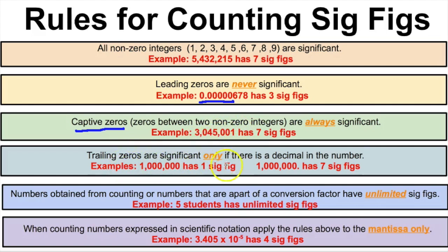Rule four: trailing zeros are significant only if there's a decimal in the number. If we write one million as 1000000 — without a decimal — there's only one sig fig because the trailing zeros are not significant. But if we write it as 1000000. with a decimal, then this number has seven significant figures because the trailing zeros now count.